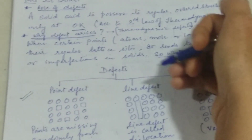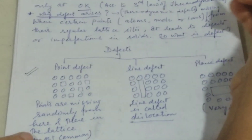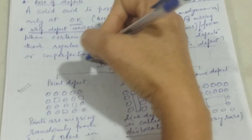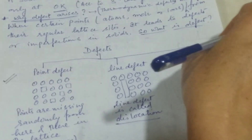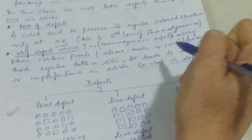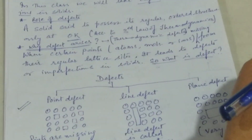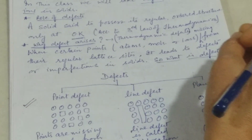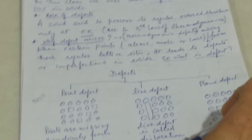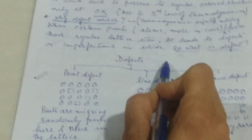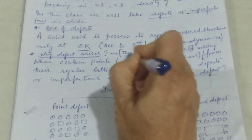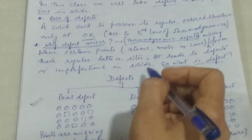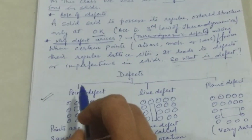Because of these defects, the conductivity of solids increases. Solids that are insulators at zero Kelvin become conductors — they start conducting electric current and heat. These defects modify the properties of the solid. Up to a certain extent these defects are permissible; if these defects are more in number, the lattice of the solid may collapse. These defects are also known as thermodynamic defects because they arise due to change in temperature.